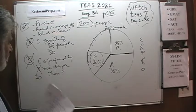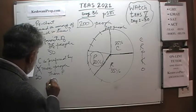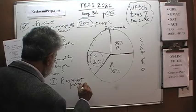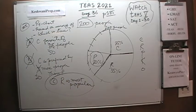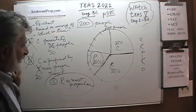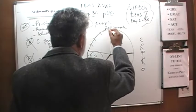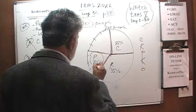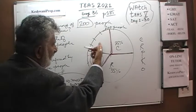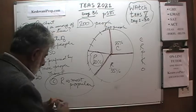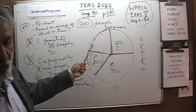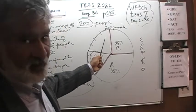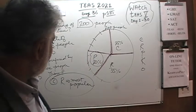Statement C says rock is the most popular. Of course it is — rock music is the biggest chunk of the pie at 35%. This slice here is only 25%, and this one is 20%. We don't even have to worry about the remaining two categories to know that rock music is the most preferred, because it's the biggest chunk and the other two categories have to share whatever space is left.